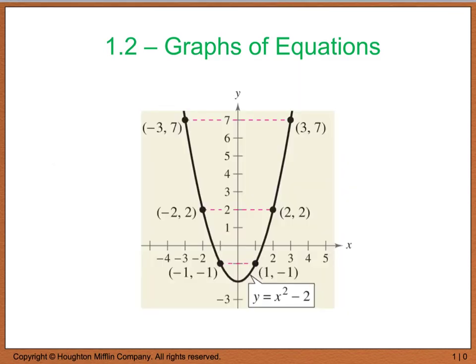Here's an example. Looking at this graph, I can pick the point (3, 7) and see a corresponding point at (negative 3, 7) — the opposite x value with the same y value. That means we have symmetry with respect to the y-axis. One half of the graph can be reflected over the y-axis to produce the other half.